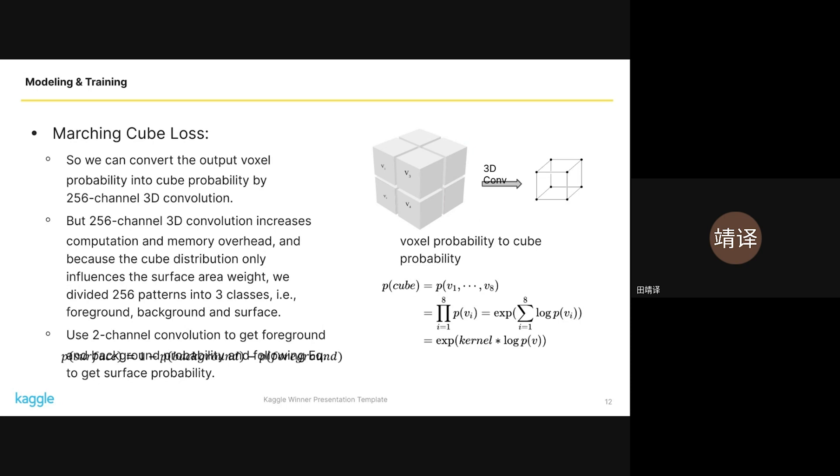We can convert the output voxel probability into cube probability by 256-channel 3D convolution, allowing for a more accurate understanding of the 3D spatial relationships within the kidneys' vasculature. To manage the computational and memory overhead of 3D convolution, we simplified this by categorizing the 256 patterns into three classes: foreground, background, and surface, making it feasible to implement. Within our training, we utilized a 2-channel 3D convolution to determine the foreground and background probabilities, from which we derived the surface probability.